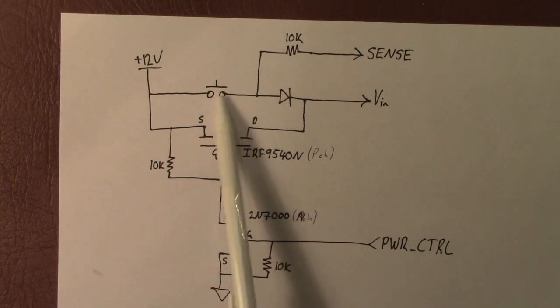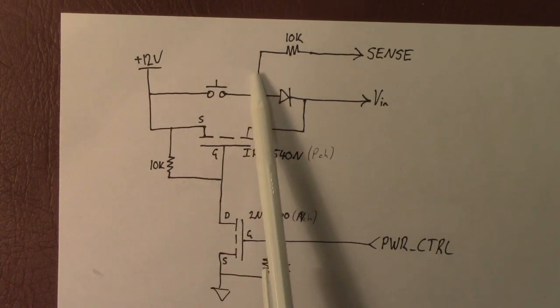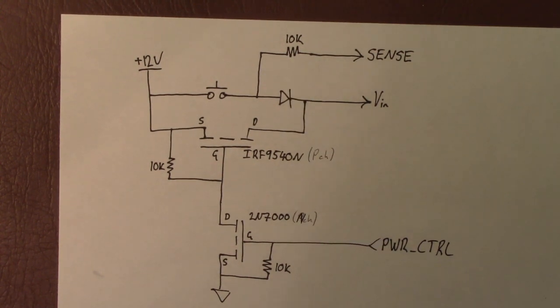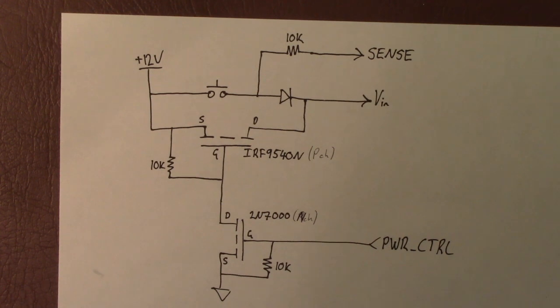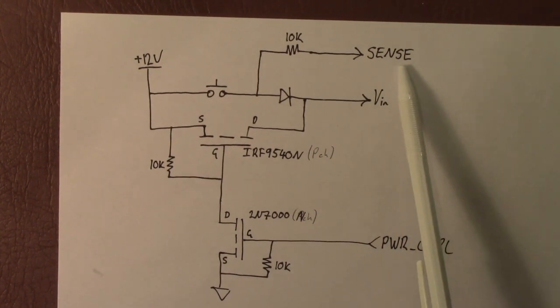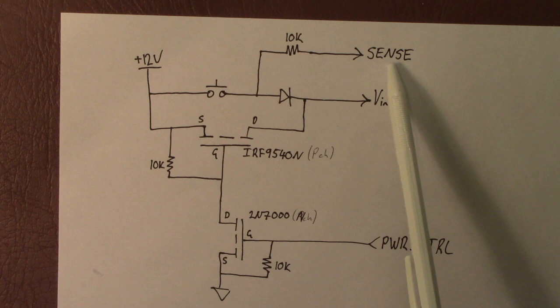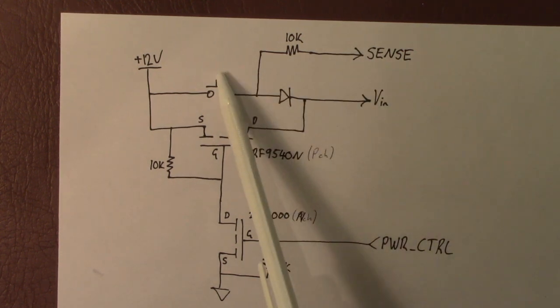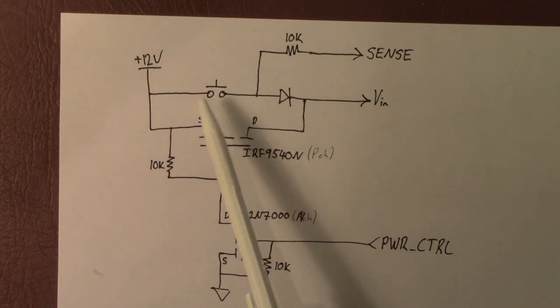When you press this button however you're going to have 12V go straight into that input. Now the 10K is going to limit the current going through that input and the internal Zener diode that protects the digital input pin of the Atmega Micro is going to effectively clamp that to 5V. So you've got a 5V signal whenever you press this button down.